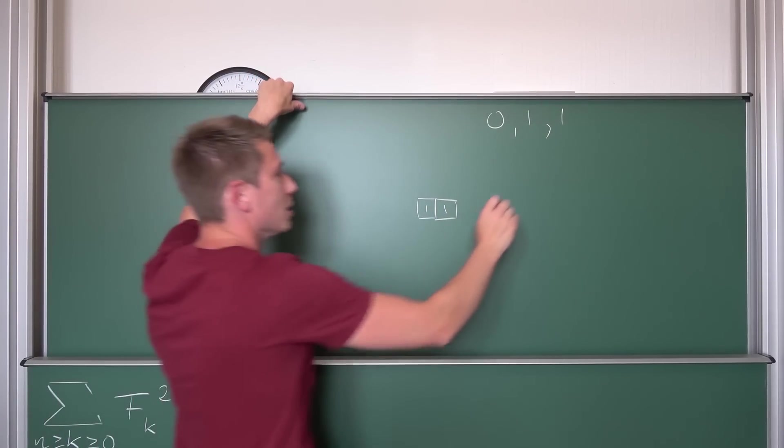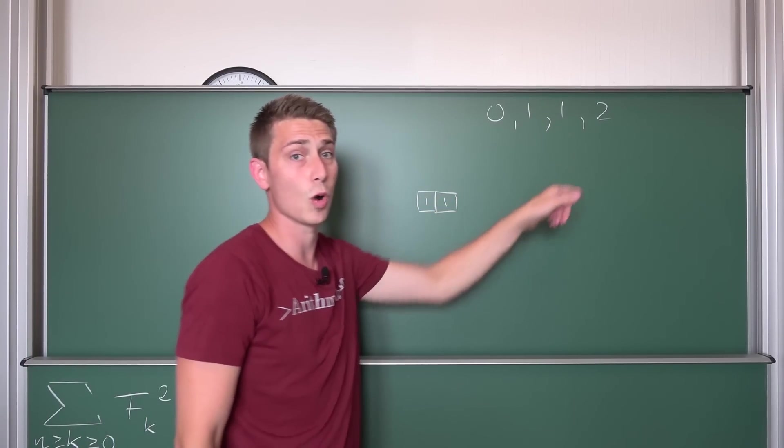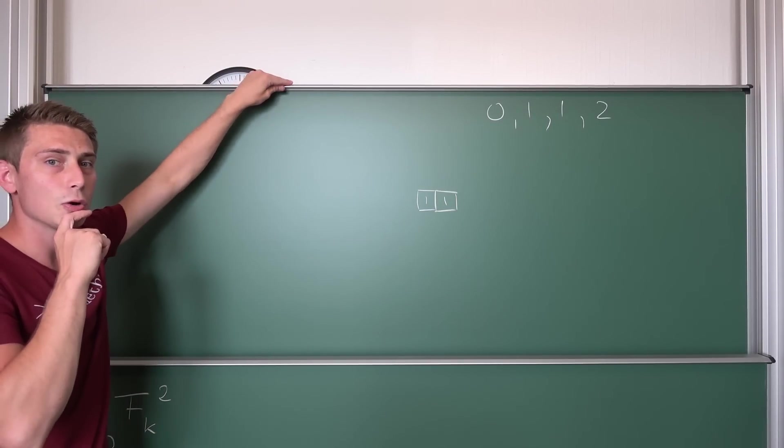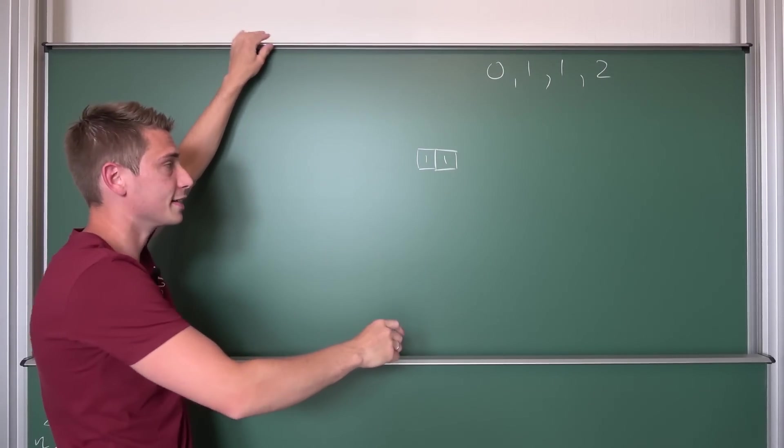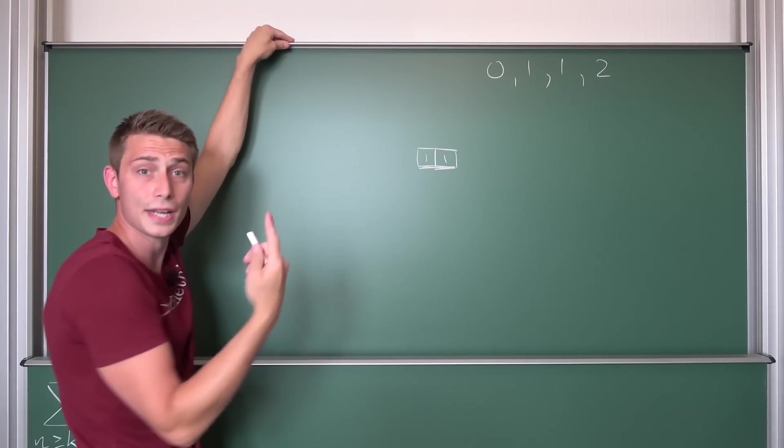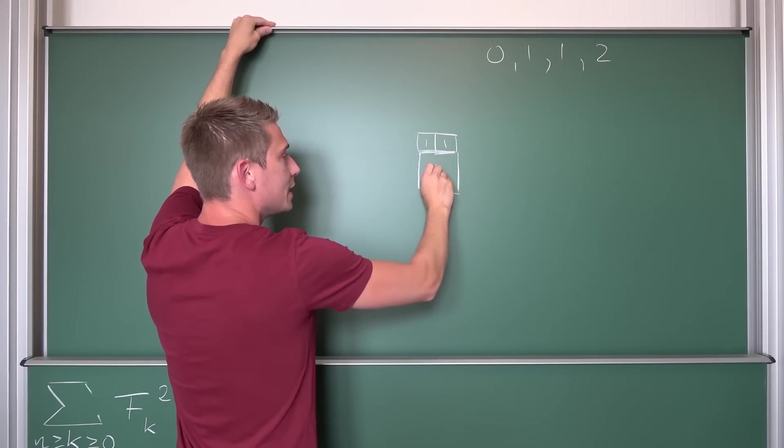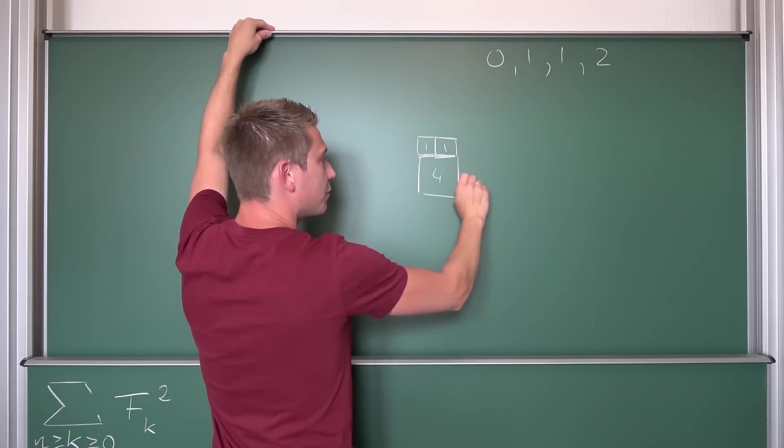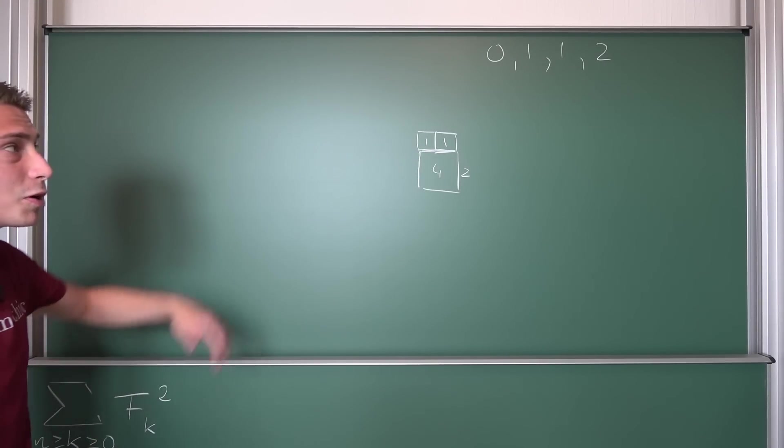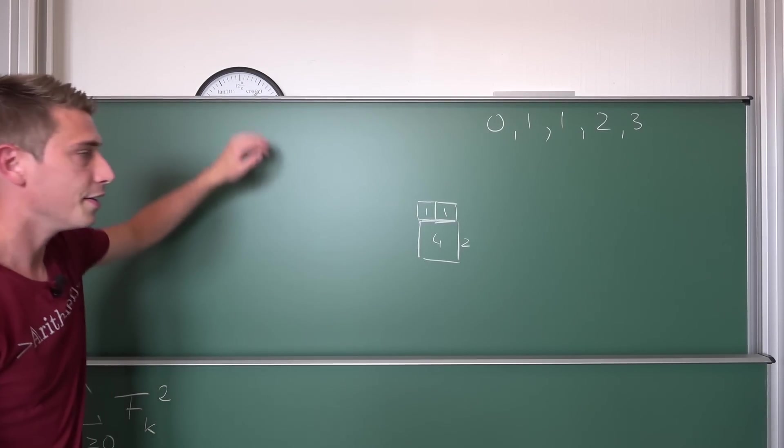What about the next Fibonacci number? The next one is two because it's one plus one. So two is going to be the length of a square, but that's just this one right here, one plus one added together, meaning we can make a square out of that. The area of this thing is four because the length here is two. Now what about the next Fibonacci number? The next one is three, one plus two. Now look at that.